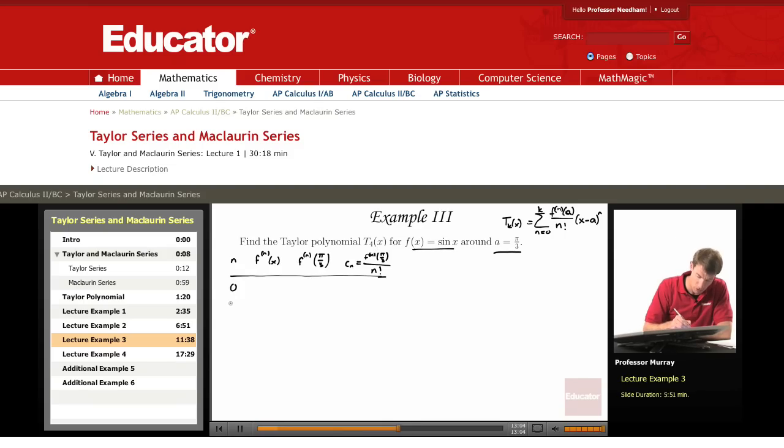I'll work this out for n equals 0, 1, 2, 3, and 4. That's because we only have to go up to the k equals 4 term, or n equals 4. So sine x, my derivatives of sine x: